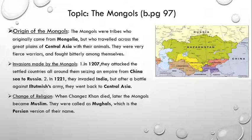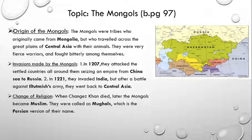Change of Religion. When Genghis Khan died, later the Mongols became Muslim. They were called Mughals, which is the Persian version of their name. For your information, the early religion of Mongols was Buddhism. They used to follow the teachings of Gautama Buddha and were called Buddhists. Genghis Khan was a non-Muslim. After his death, the Mongolian empire broke into different groups, and many years later, when different Muslim rulers came, they enforced Islam in this region. This is how Mongols converted and became Mughals, and this was the start of the Mughal era.